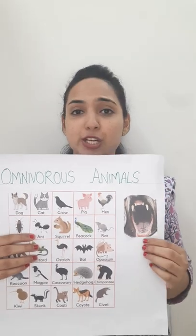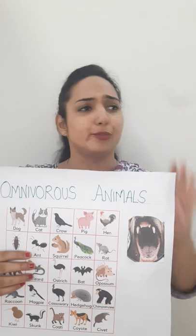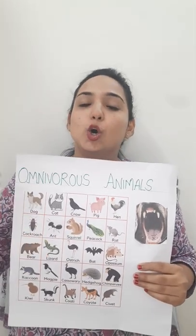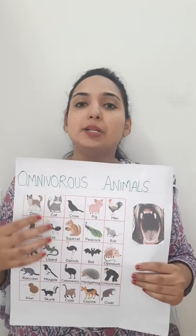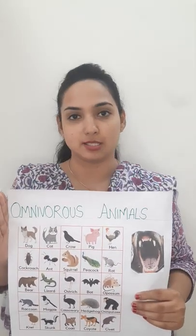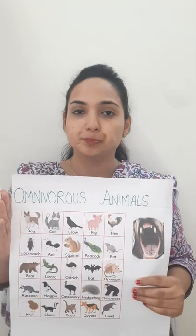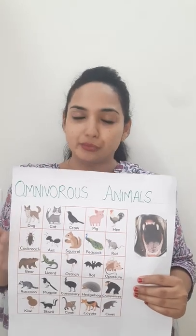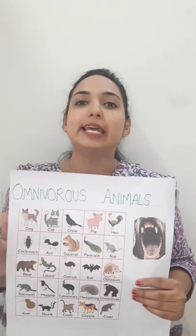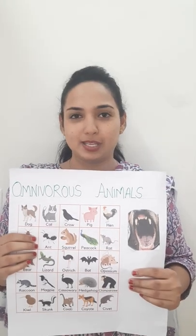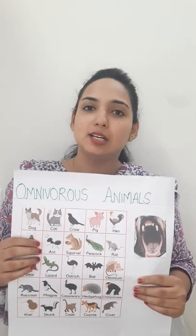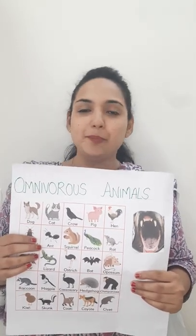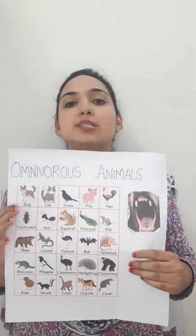All these animals can survive by eating both plants and animals. They have a dental structure which can chew and grind everything from plants to animals. They can fill their stomach with plant products or animal products as well. Their diet is based on season and on availability. So that was about the omnivorous animals.